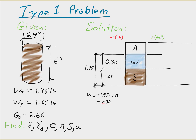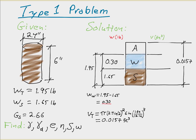We now move to the volume side of the diagram. Since we know the original dimensions of the specimen, we compute the total volume as pi r squared times the height: pi times (2.4 inches divided by 2) squared times 6 inches. To convert from cubic inches to cubic feet, we multiply by (1 foot / 12 inches) cubed. Completing this computation, the total volume is 0.0157 cubic feet, which we record on the diagram.